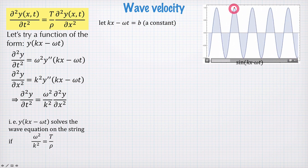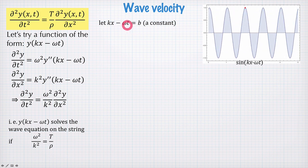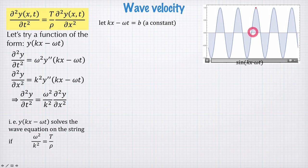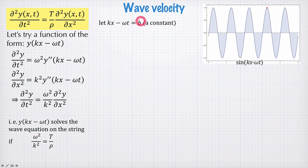So imagine we're following a point here in the wave, this red point, and t is increasing and x is increasing and we're following along the peak of the wave where b is some constant.